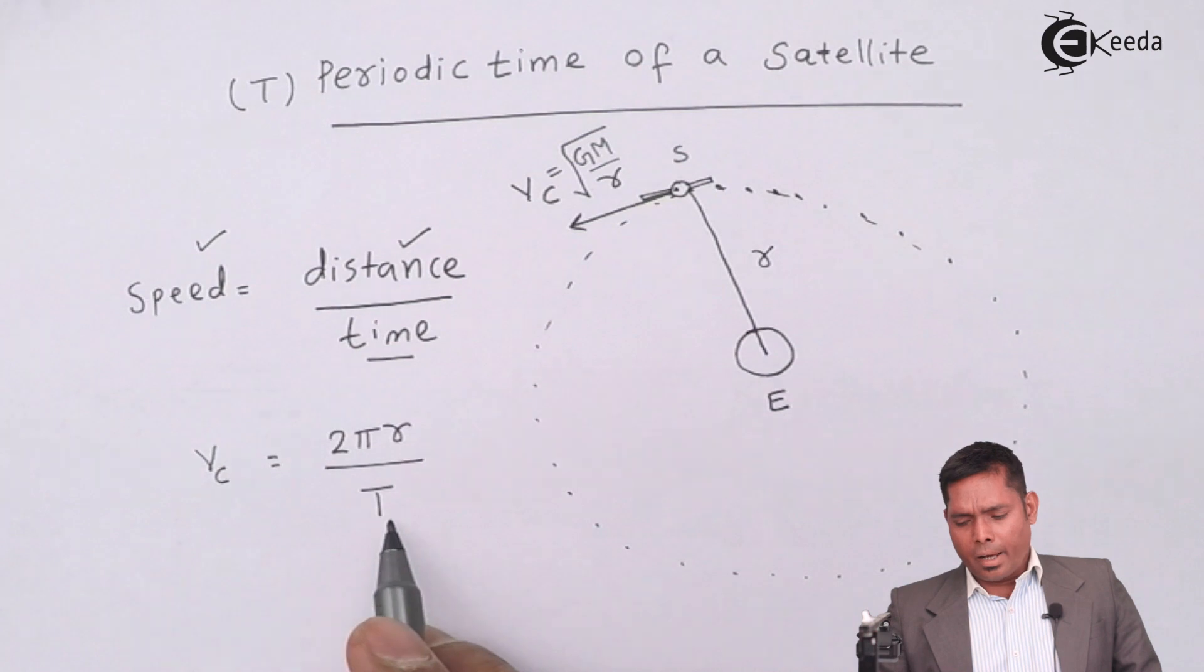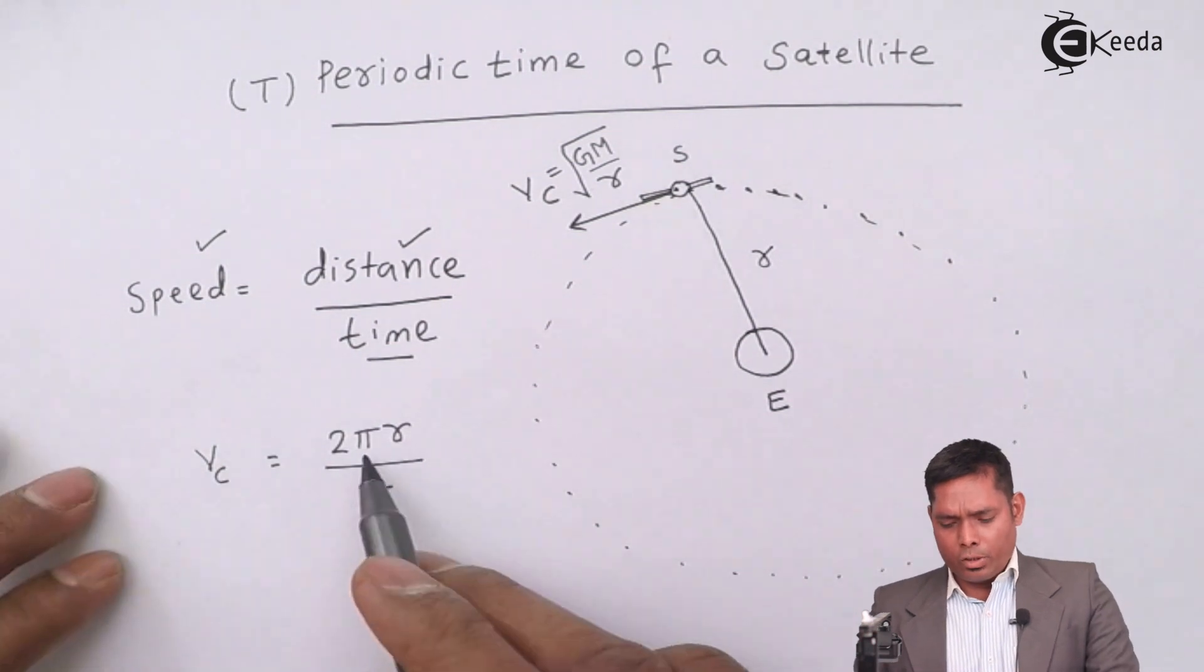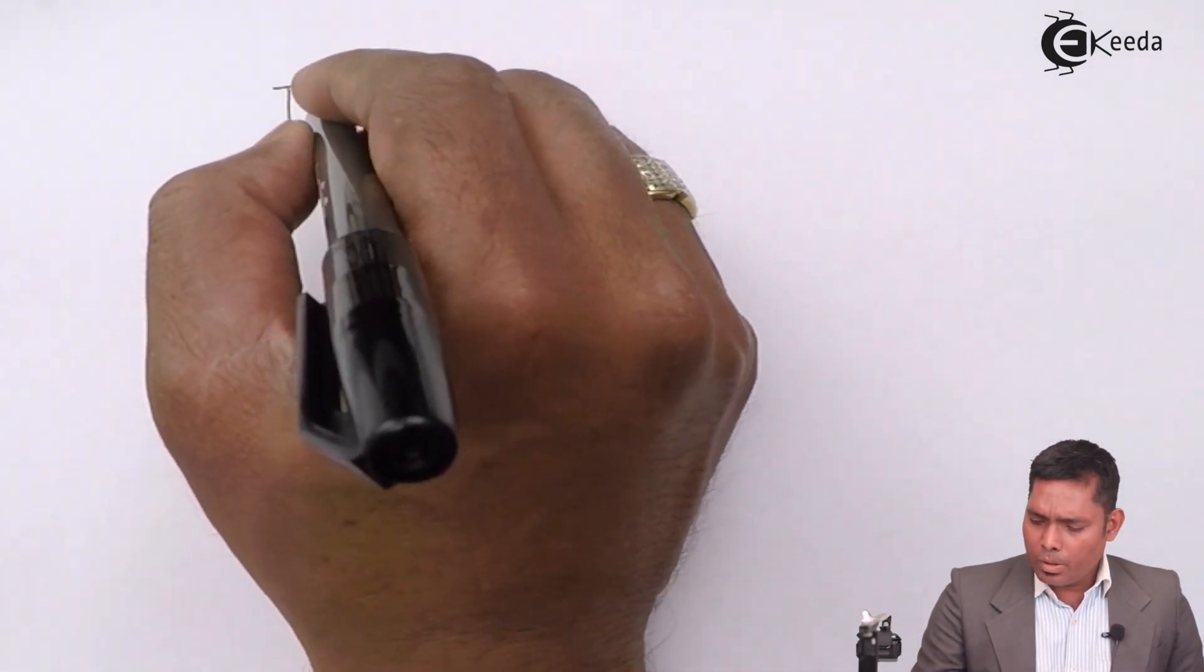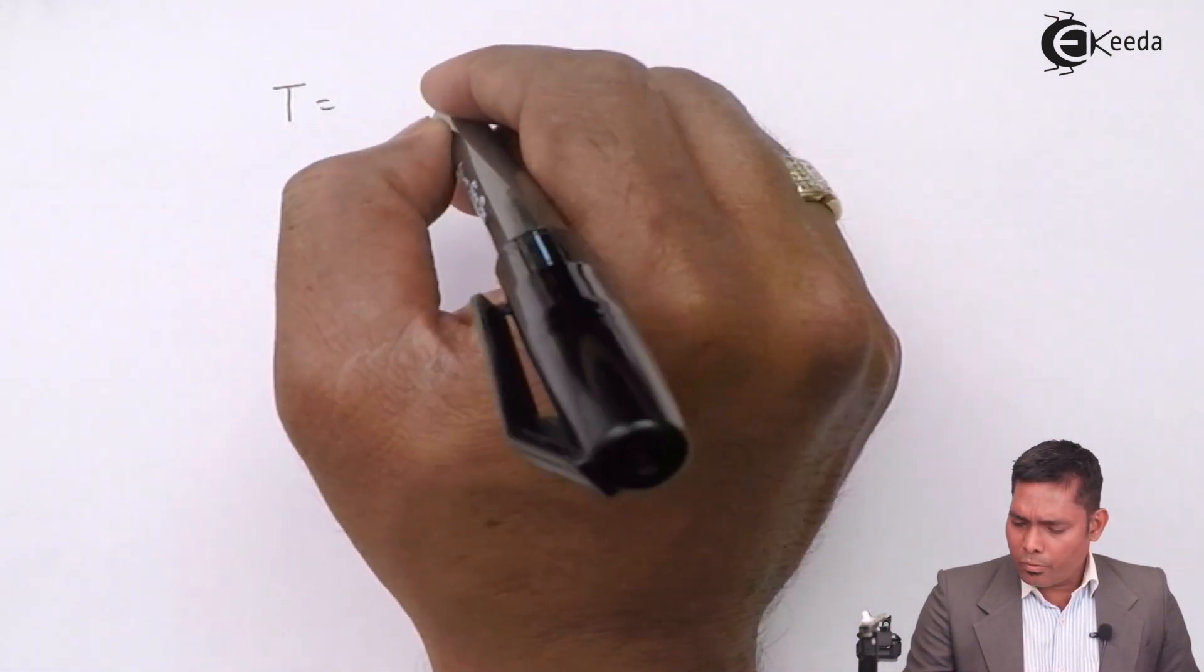So from here, I can get the expression for T, which is 2 pi r over vc. So T comes out to be 2 pi r over vc.